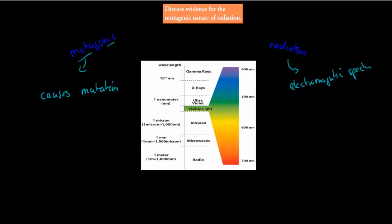Now which ones are mutagenic? These would be gamma rays, x-rays, and ultraviolet rays. And we'll discuss these three in more detail in this video.